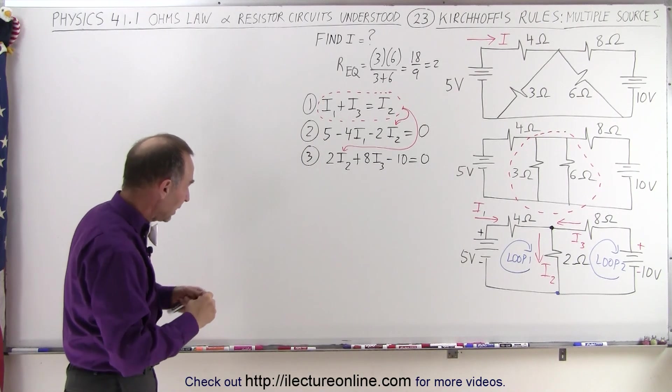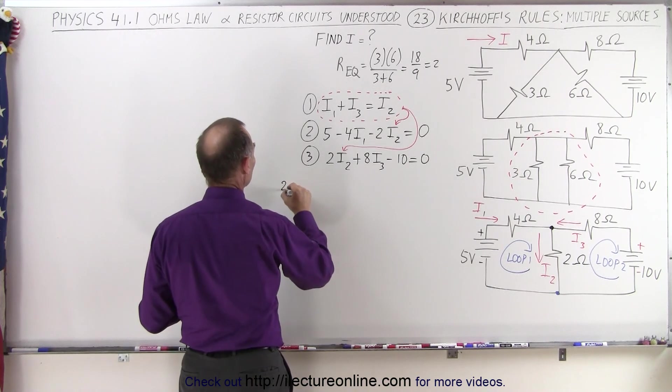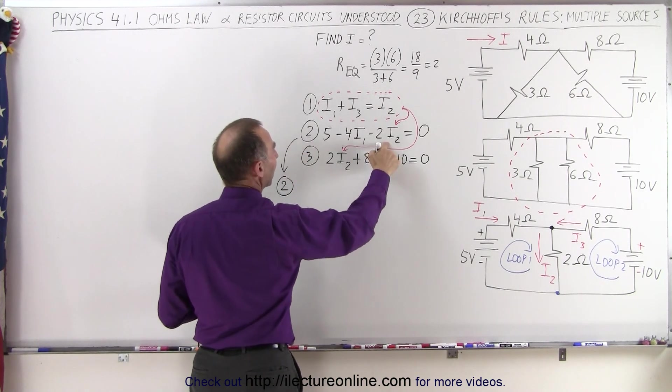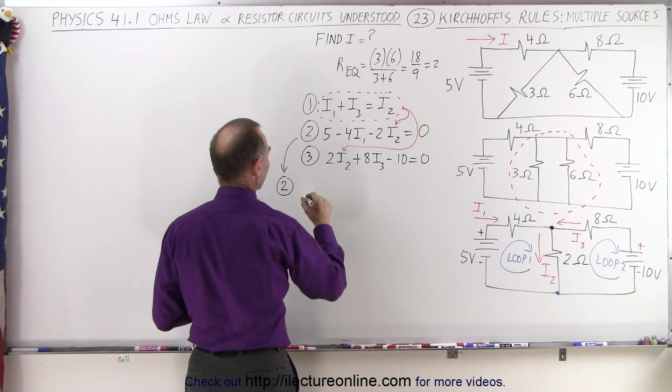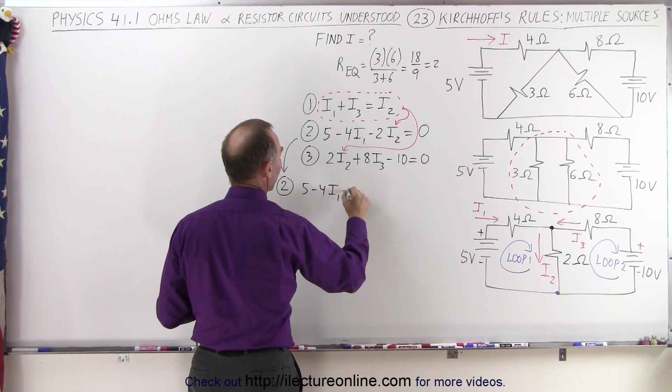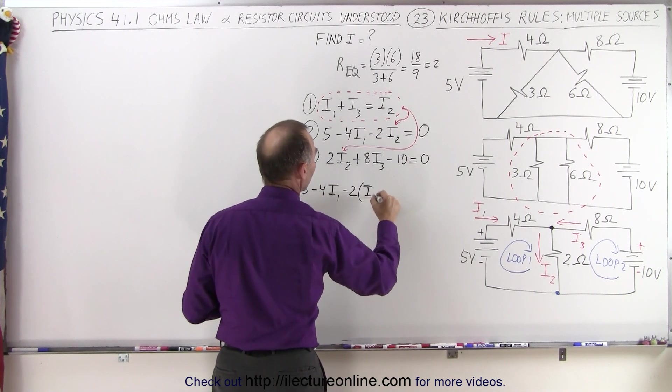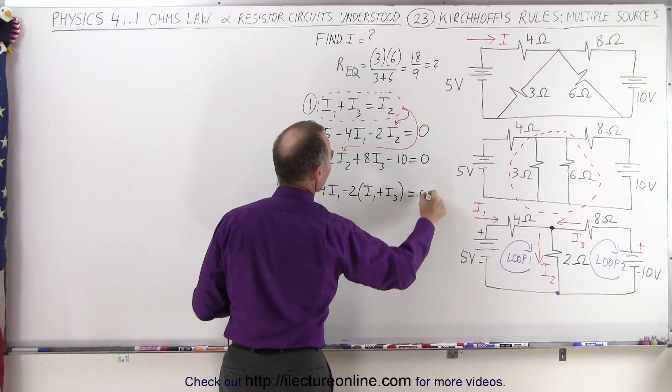and I only have I1 and I3 in the two equations. So equation number two is going to be rewritten by replacing I2 by what I2 is equal to. So we end up with five minus four times I1 minus two times, and instead of I2 we write I1 plus I3 equals zero.